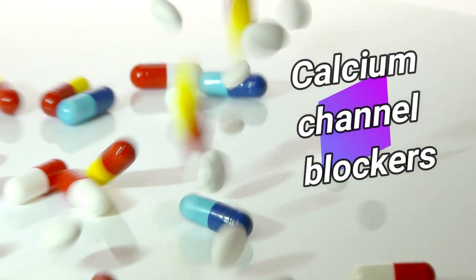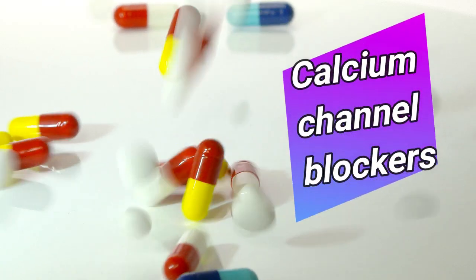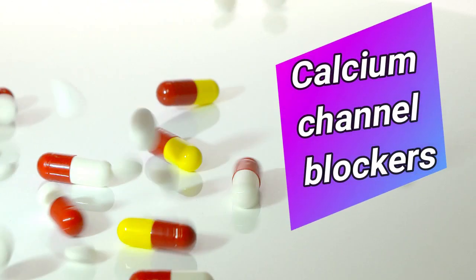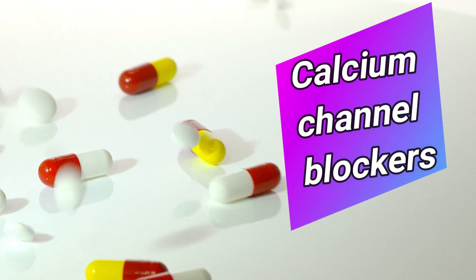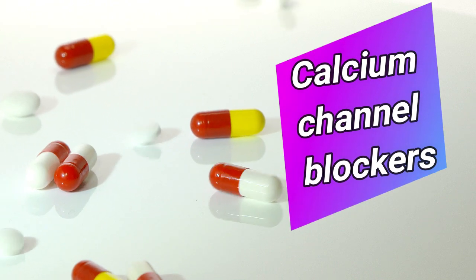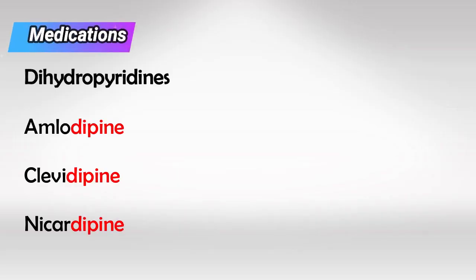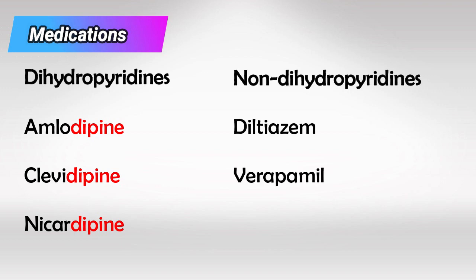Welcome back. Today we'll be talking about calcium channel blockers. We have two groups: the dihydropyridines, which are the medications ending with the suffix '-dipine', and the non-dihydropyridines, which are diltiazem and verapamil.